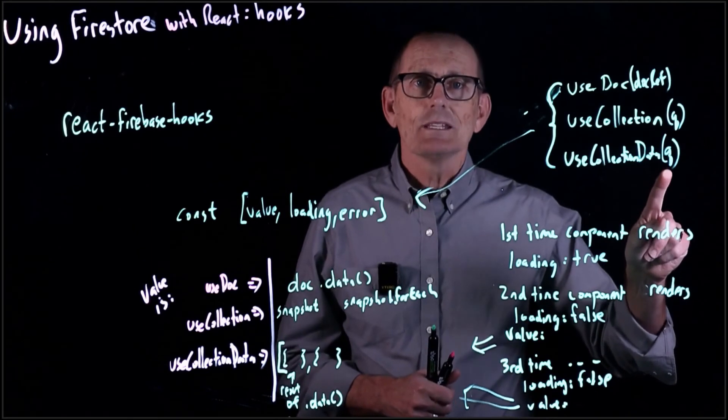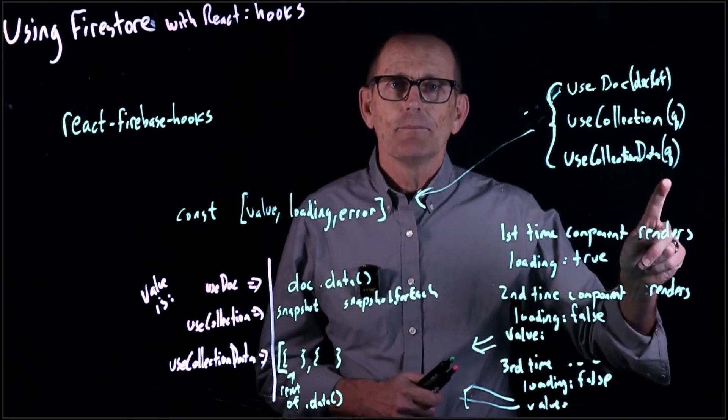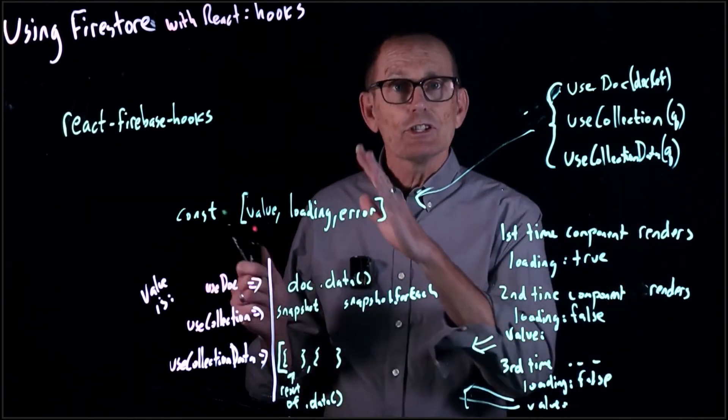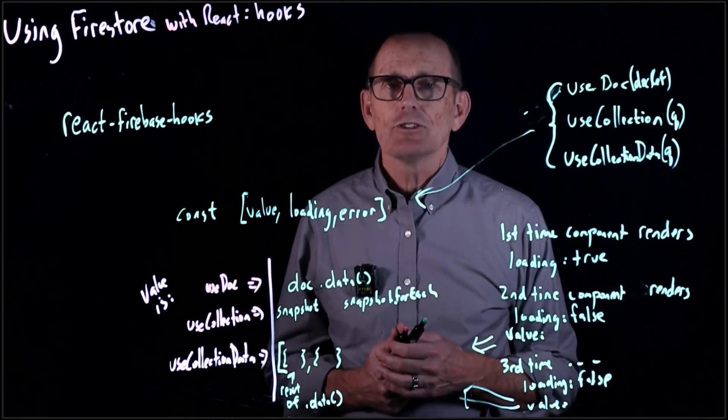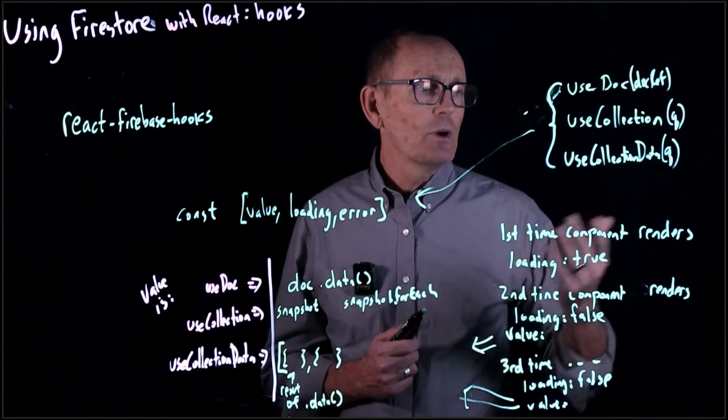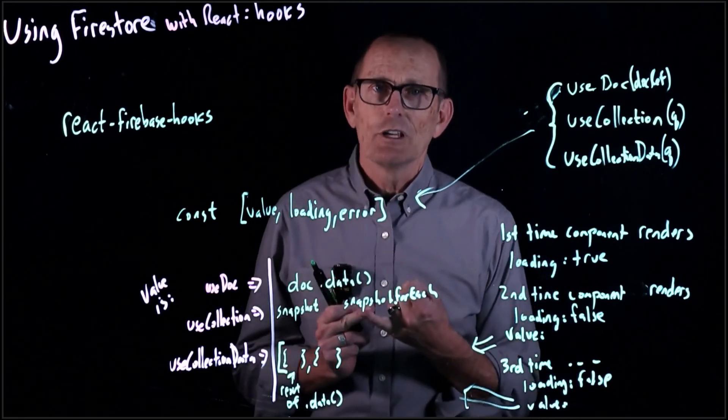If we are using a query that limits us, let's say we have a query that's only looking at cuisine of brunch, then whatever changes get made to our collection of restaurants that doesn't involve a brunch cuisine, we're not even going to re-render, right? We'll only re-render if we have a new brunch restaurant, or a deleted brunch restaurant, or a modified brunch restaurant.